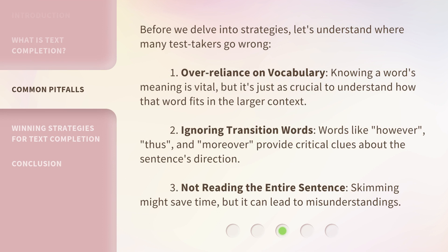Before we delve into strategies, let's understand where many test takers go wrong. First, over-reliance on vocabulary — knowing a word's meaning is vital, but it's just as crucial to understand how that word fits in the larger context. Second, ignoring transition words — words like 'however,' 'thus,' and 'moreover' provide critical clues about the sentence's direction. Third, not reading the entire sentence — skimming might save time, but it can lead to misunderstandings.